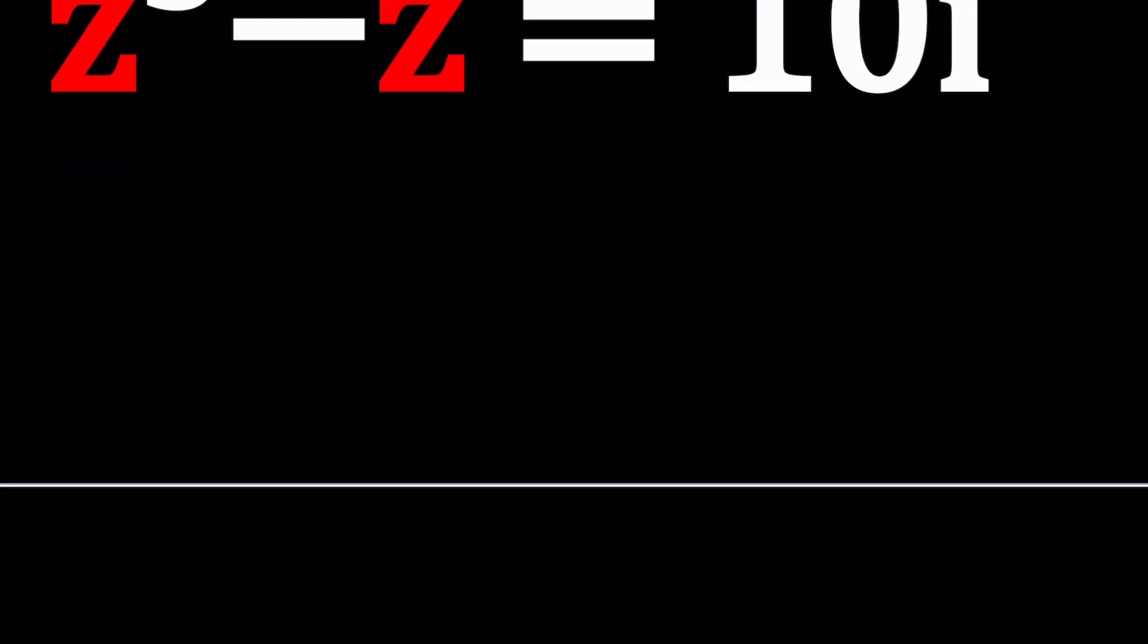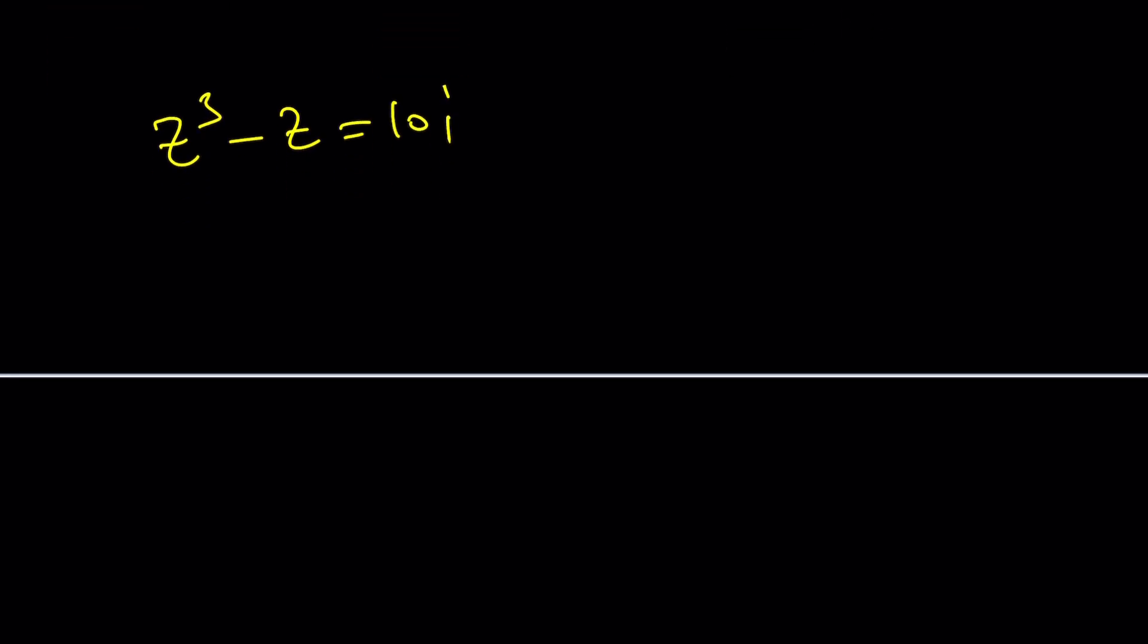z³ - z = 10i. Now why did I say there's an easy to find solution? Because of the way it is given. We have a multiple of i. So in this problem, you can definitely try something like that. But before that, we're going to do something crazy, which is called the cubic formula. Why? Because it's fun.